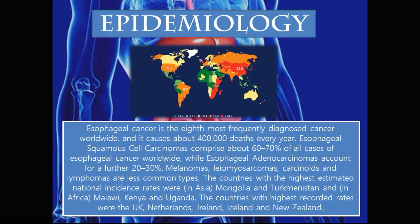The countries with the highest estimated national incidence rates were in Asia — Mongolia and Turkmenistan — and in Africa — Malawi, Kenya, and Uganda. The countries with the highest recorded rates were the UK, Netherlands, Ireland, Iceland, and New Zealand.